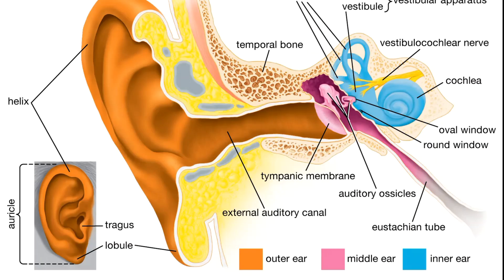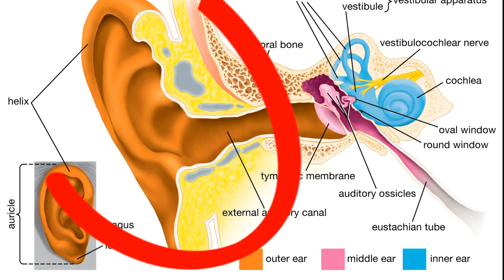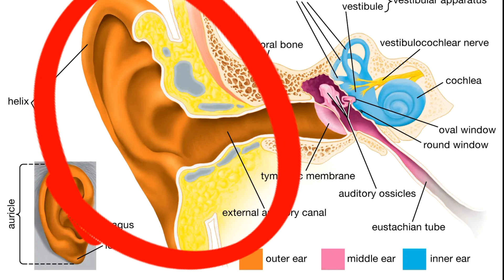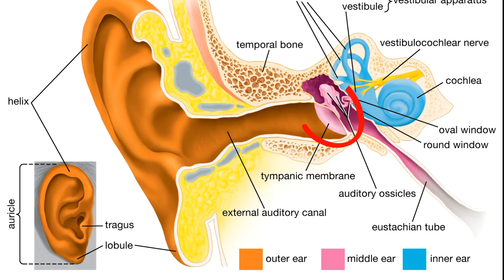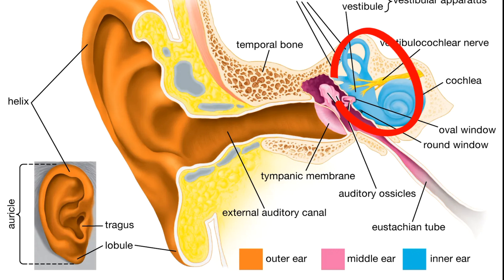The ear is a complex organ divided into three main parts: the outer ear, the middle ear, and the inner ear. The outer ear, consisting of the pinna and the ear canal, acts as a funnel. It collects sound waves and channels them toward the middle ear.